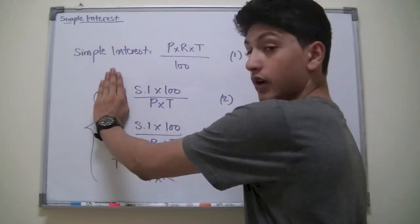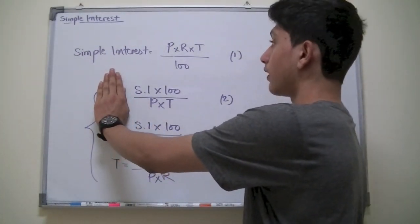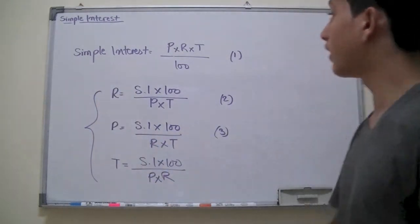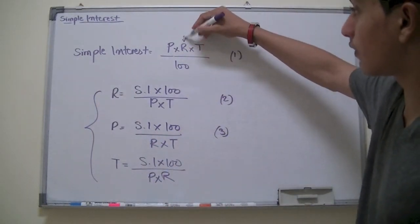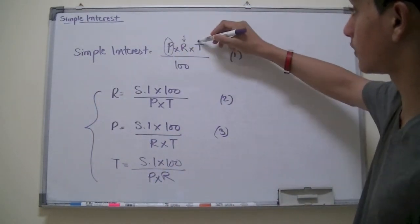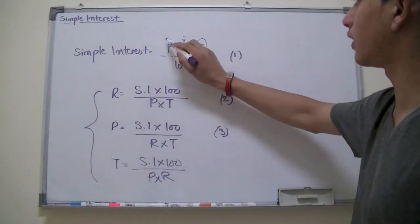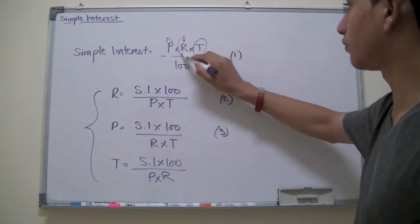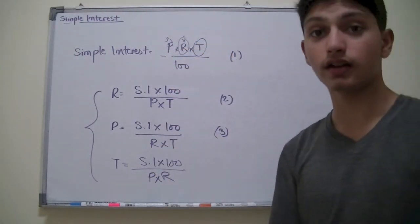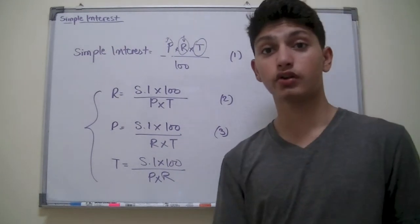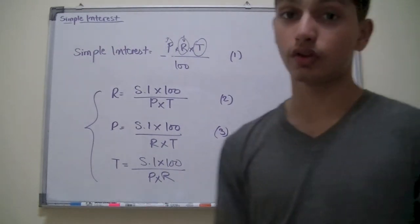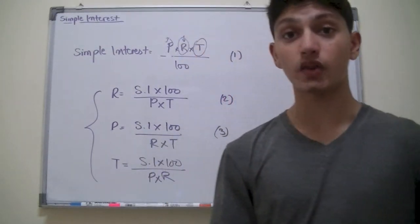Basically, to remember all these three, the letter which is outside or the unknown letter that you're trying to find is always equal to simple interest times 100 divided by the remaining letters that you have. If R is unknown, you know it's P times T because R is unknown, so the remaining letters are P and T. Same goes with P. If P is unknown, what are the remaining letters? R and T. So simple interest times 100 divided by all the remaining letters multiplied together.